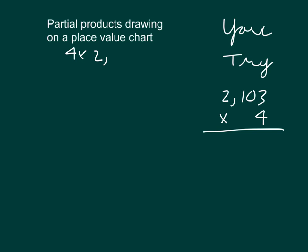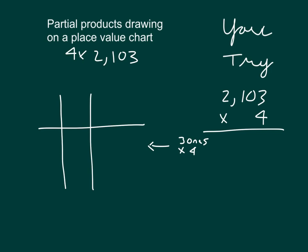It is your turn to try. Let's go ahead and solve the problem: four times two thousand one hundred three, using partial products drawing on a place value chart. Be careful how you are breaking this down. Remember that first line is going to be three ones times four — that will be the first thing into the place value chart. It looks like we need ones, tens, hundreds, and thousands. Pause the video while you work it out.